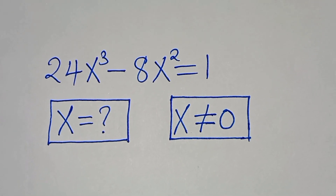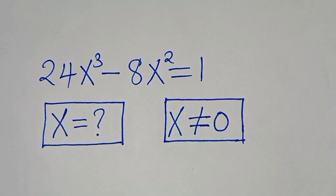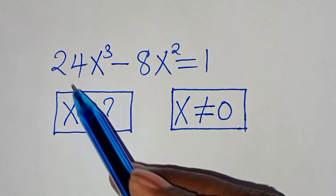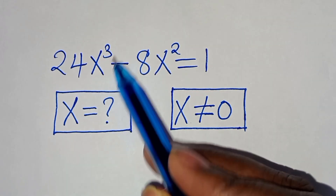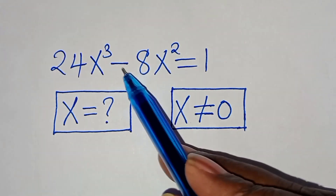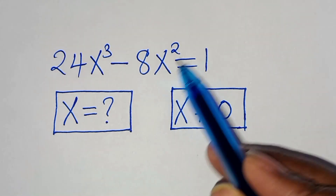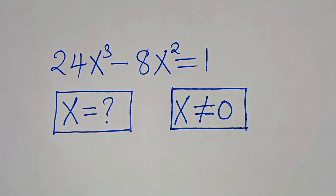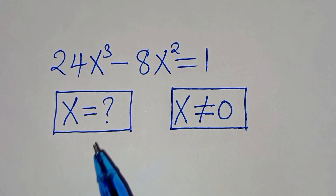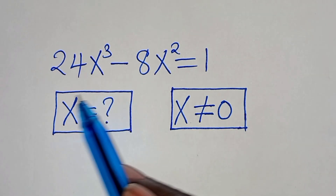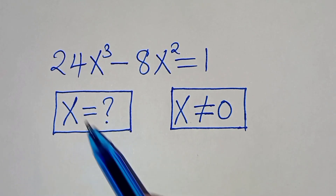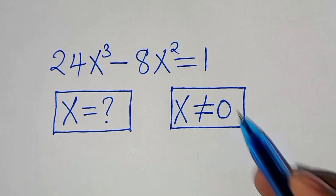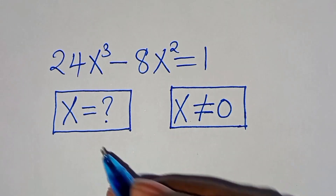Hello everyone, you're welcome to solve this nice algebra problem, which is 24x to the power of 3 minus 8x to the power of 2, this is equal to 1. So, what are the values of x, given that x is not equal to 0?